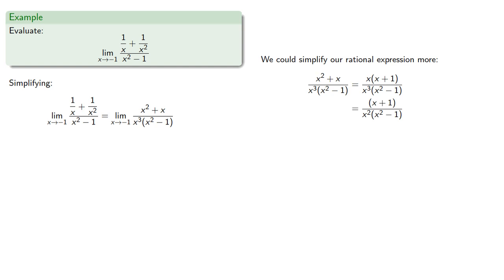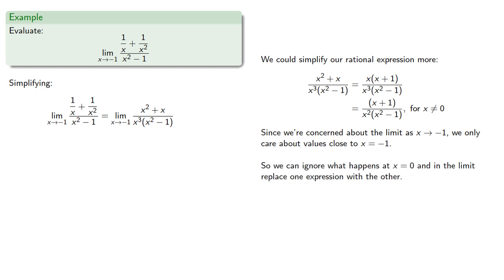Our equality exists as long as x is not equal to 0. Now, since we're concerned about the limit as x approaches negative 1, we only care about values close to x equals negative 1, so we can ignore what happens at x equals 0, and in the limit, replace the one expression with the other.